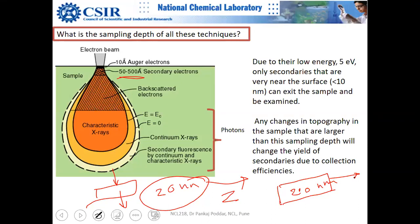Electrons get scattered from Coulombic interaction. If an atom has more electrons, there is more Coulombic interaction and electrons get scattered more strongly. This is why there is a wide difference between light elements like carbon and heavy elements like gold in terms of electron mean free path.